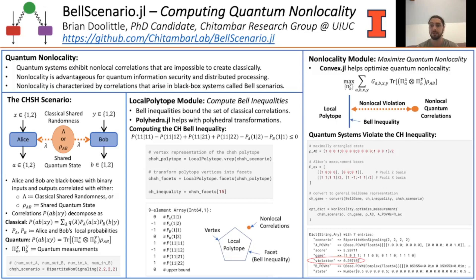This poster introduces a Julia package called bellscenario.jl, which helps solve the computing problems that arise in quantum nonlocality. The package combines the tools offered by polyhedra.jl and convex.jl with quantum mechanics to solve complex computing problems.